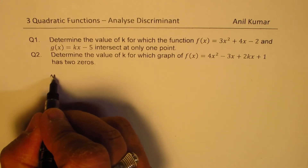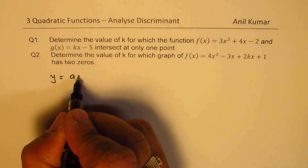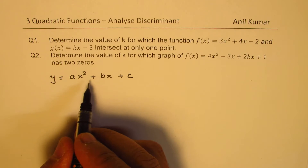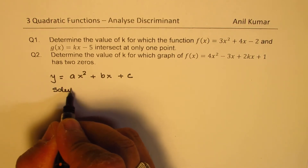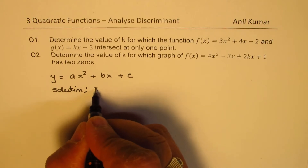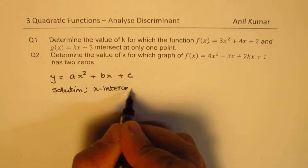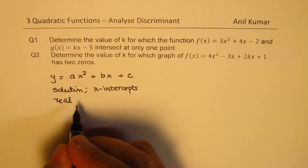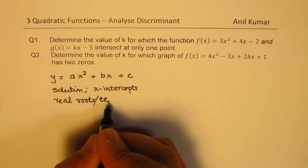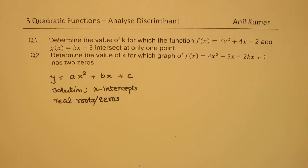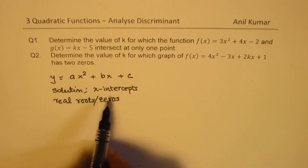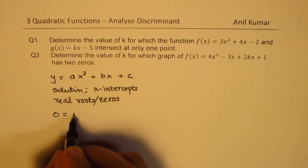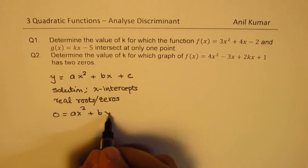As you know, for a quadratic function the general equation is y = ax² + bx + c. When we want to find a solution — sometimes called x-intercepts, real roots, or zeros — we normally equate y to 0 and write this as 0 = ax² + bx + c.